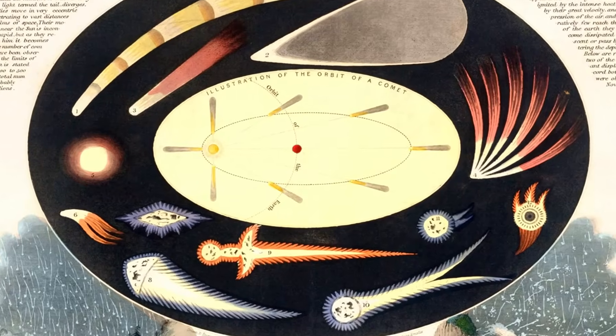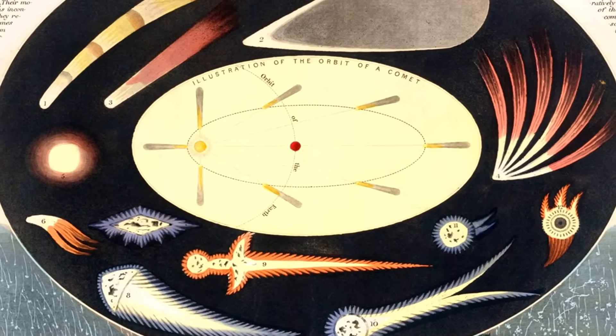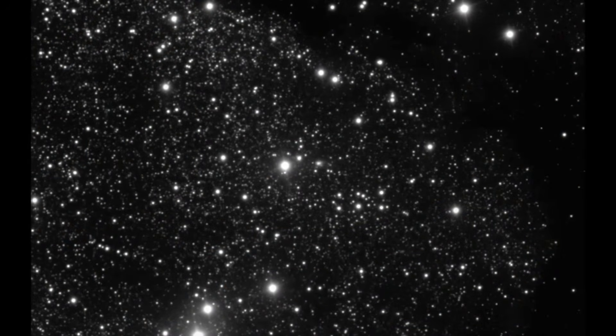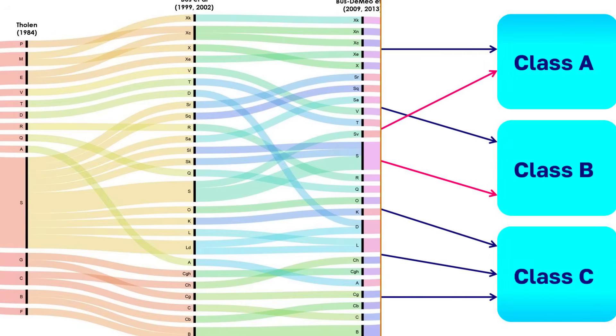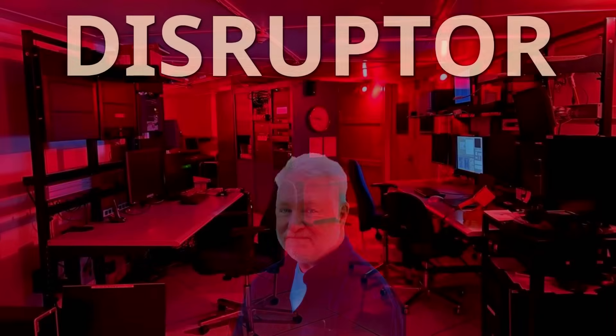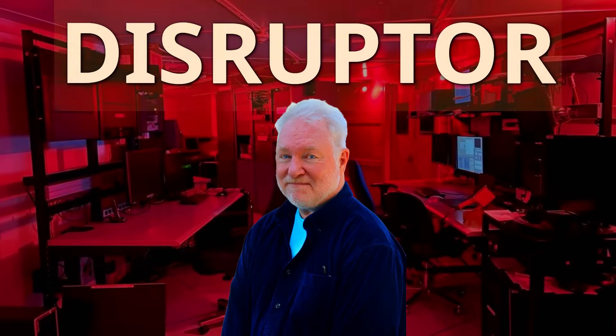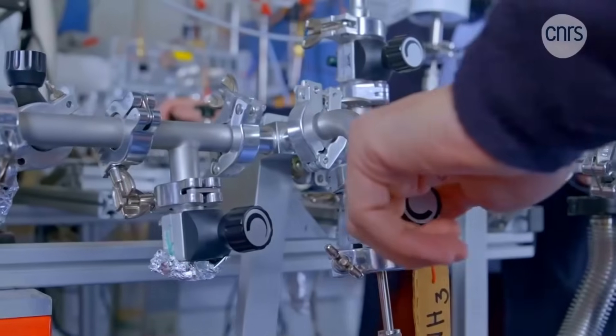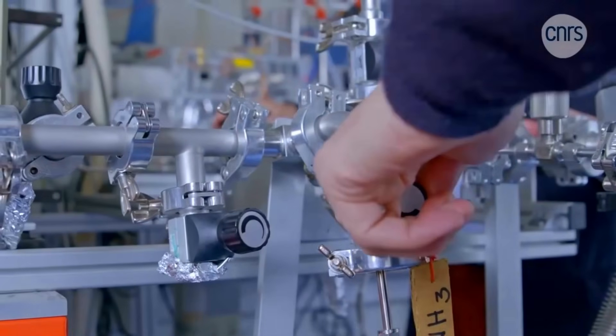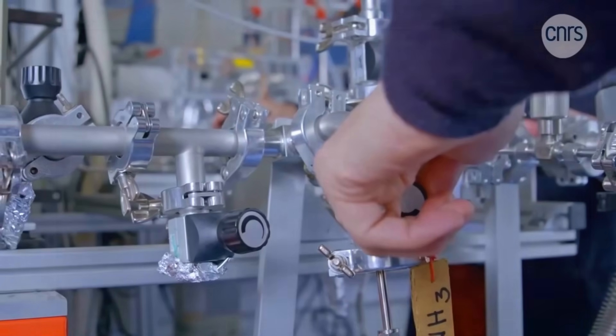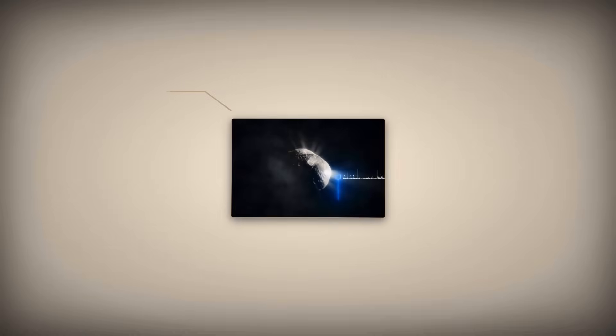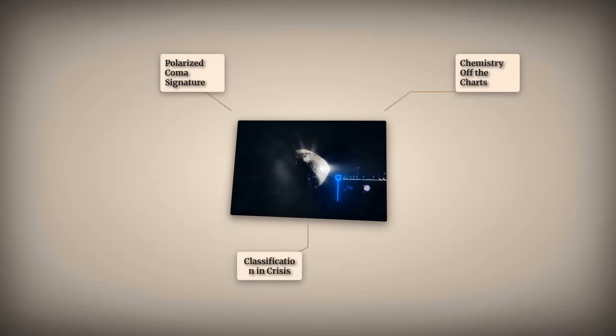For decades, comet science leaned on a single taxonomy: dusty, volatile, rich bodies shaped by solar system history. 3I Atlas is forcing a rethink. Karen Meech, who has spent a career cataloguing comet families, describes each interstellar visitor as a control group, a natural experiment that exposes the limits of our categories. With a coma that polarizes light like a trans-Neptunian object and chemistry that dodges every template, 3I Atlas doesn't slot easily into known types.